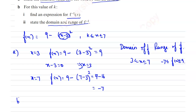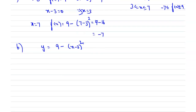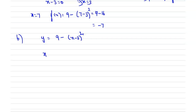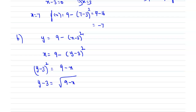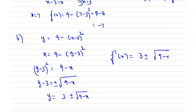Now we find the inverse function. Let y = 9 - (x - 3)². Interchange the variables: x = 9 - (y - 3)². Solving for y: (y - 3)² = 9 - x, so y - 3 = ±√(9 - x), giving y = 3 ± √(9 - x). Since the domain is x ≥ 3, we take the positive root: f⁻¹(x) = 3 + √(9 - x).